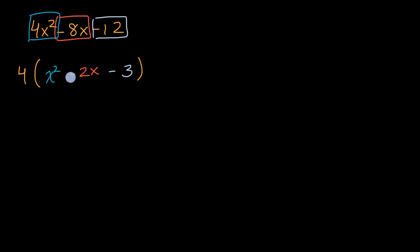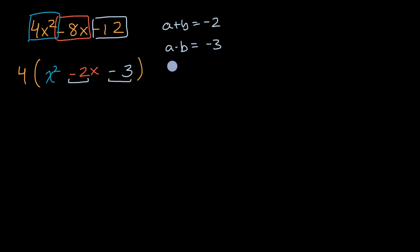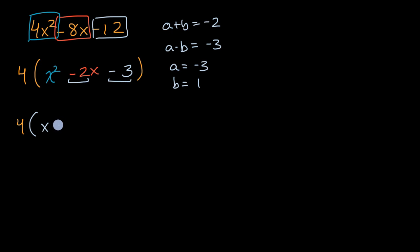Am I done factoring? It looks like I could factor this thing a little bit more. Can I think of two numbers that add up to negative two, and when I multiply them I get negative three? Since the product is negative, one of them is going to be positive and one is going to be negative. So A plus B equals negative two, and A times B equals negative three. A could be equal to negative three and B could be equal to one, because negative three plus one is negative two, and negative three times one is negative three. So I could rewrite all of this as four times x plus negative three — or x minus three — times x plus one. And now I have actually factored this completely.